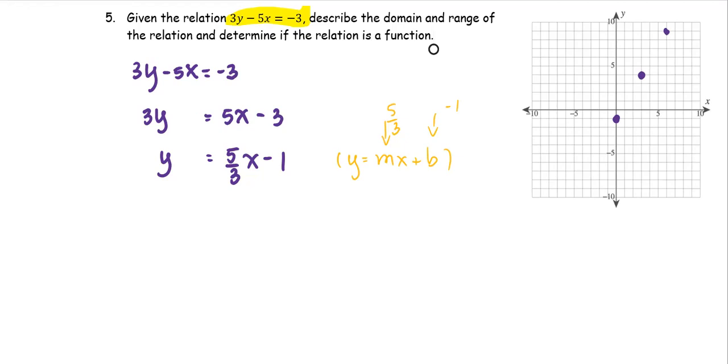And the other way, we go down 5, 1, 2, 3, 4, 5, and go over to the left 3, 1, 2, 3. So that should be plenty. So we have the line that represents this relation.